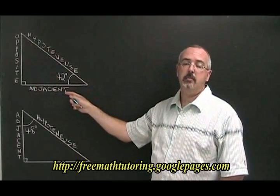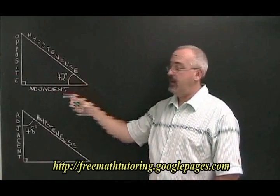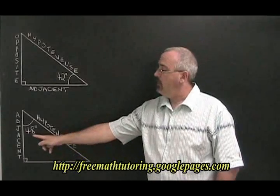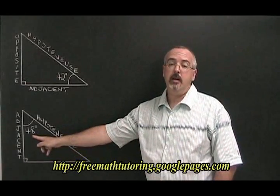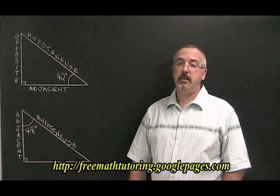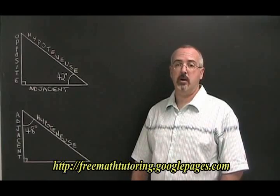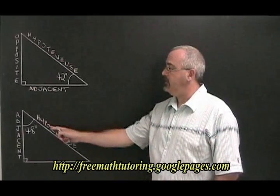The word adjacent means beside, and this side is beside the 42 degree angle. In this triangle, if we're working with the 48 degree angle, the adjacent side is over here. So much like the opposite side, the adjacent side switches places depending on which angle you're working with. The hypotenuse, as usual, never moves.